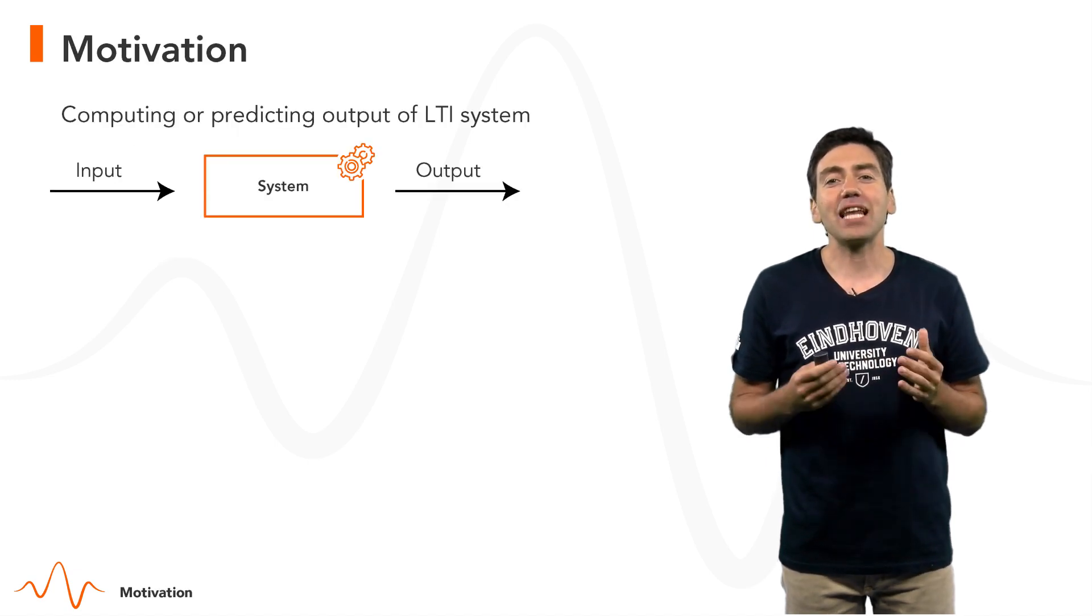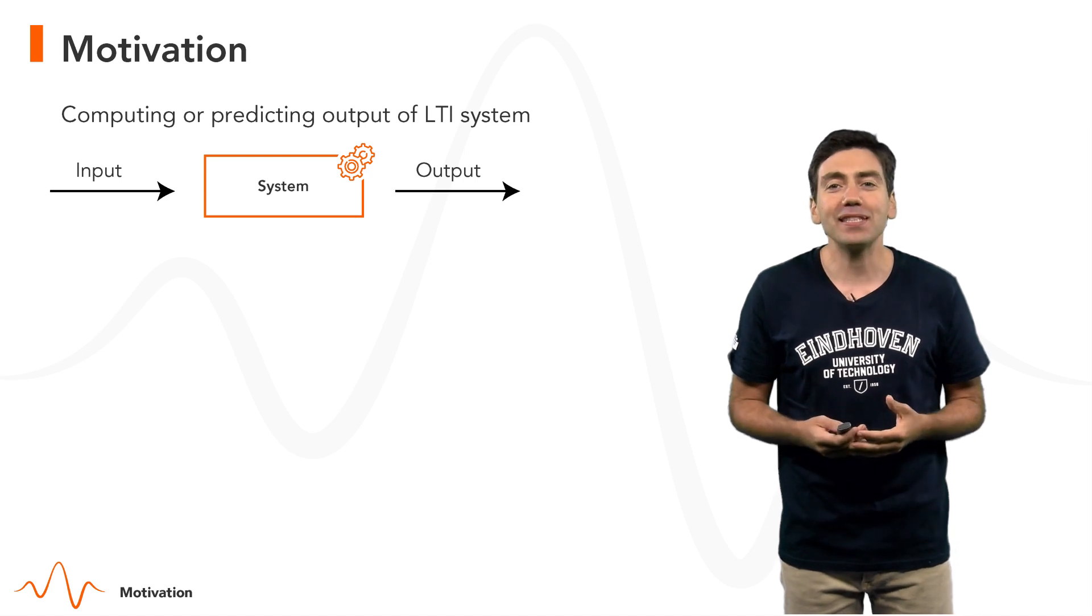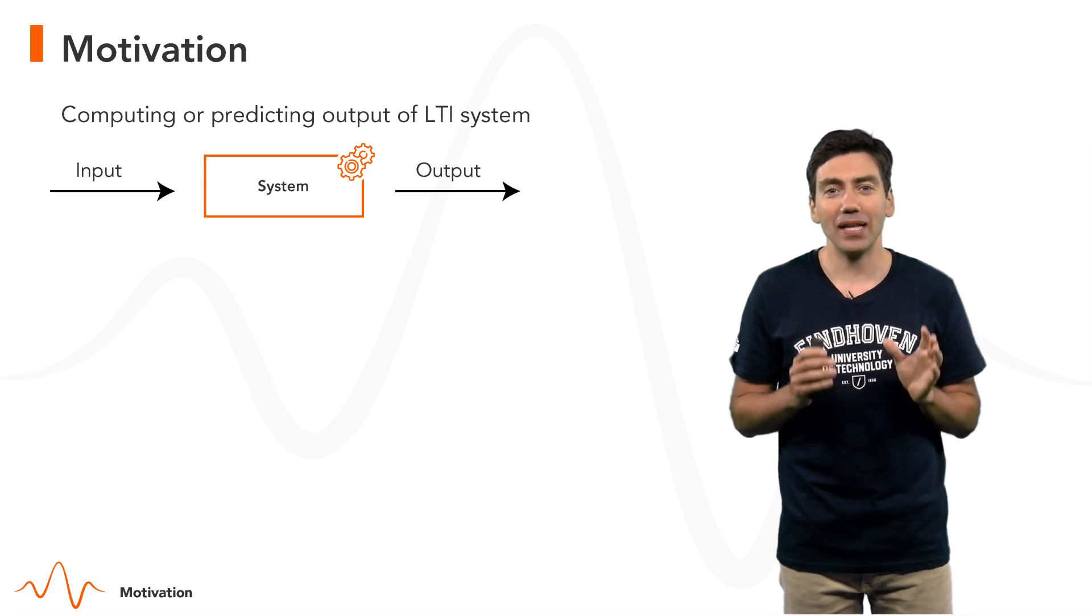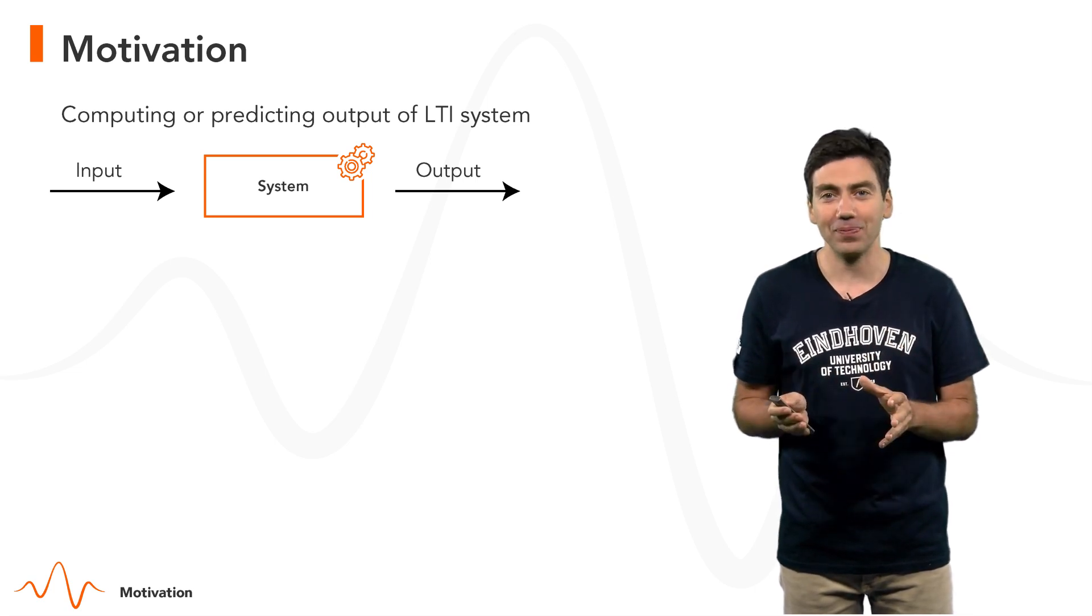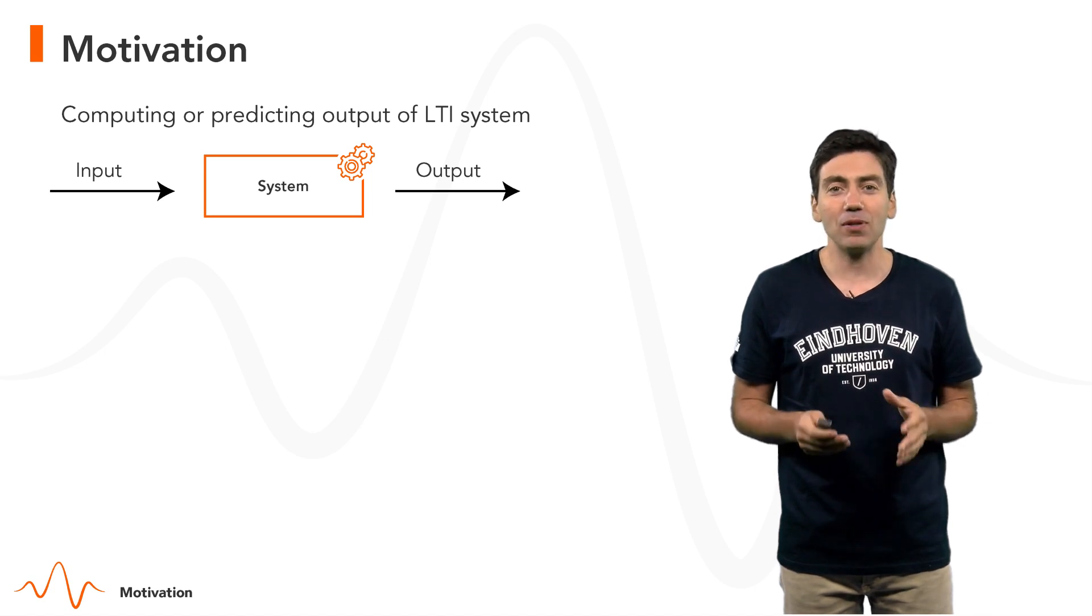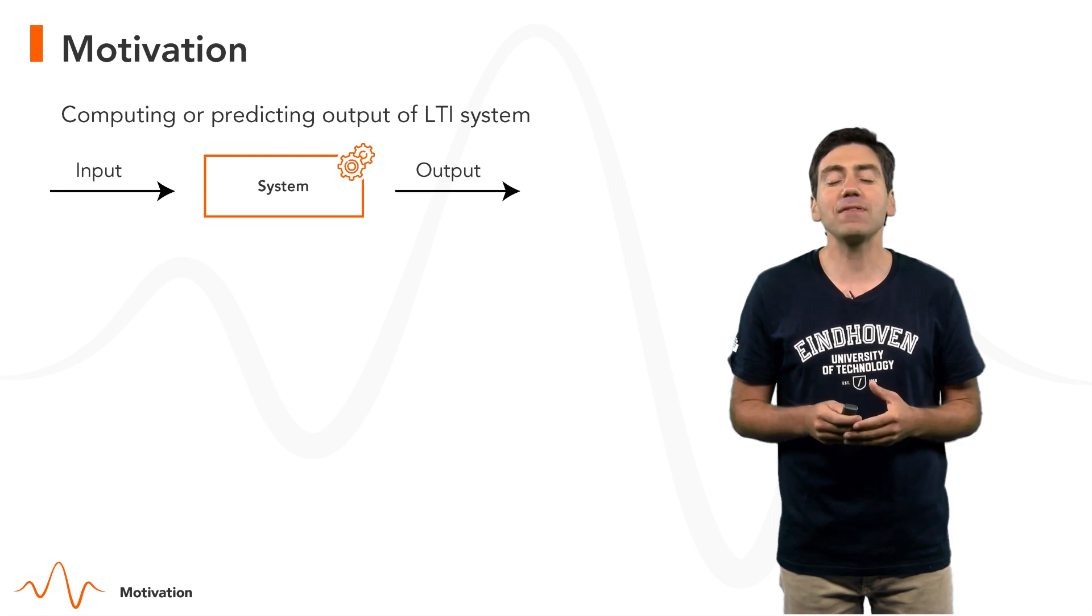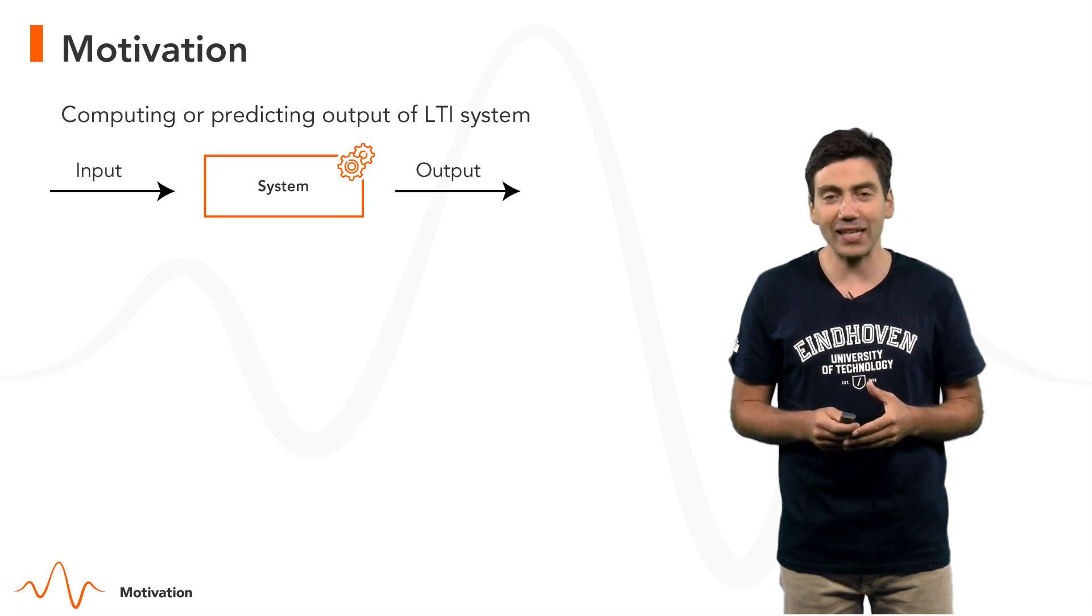Convolution will basically allow us to compute the output of a system to a given input when the system is of a special class called an LTI system, a linear time-invariant system. Computing or predicting the output of a system to a given input is important in many applications. We'll now discuss a few examples which will be detailed later.